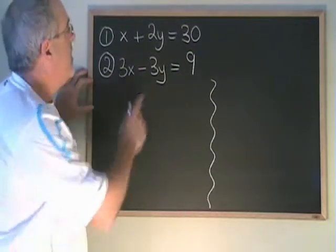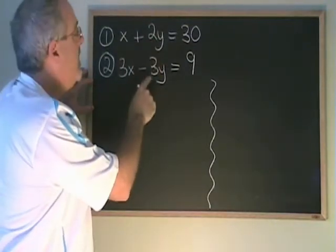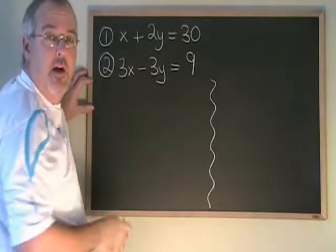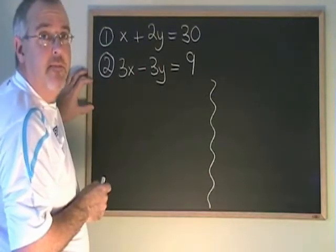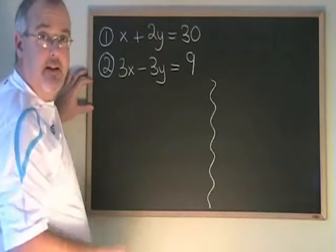When we do that, if the denominator of one fraction is a 2 and the denominator of the other is a 3, we look for the lowest common multiple. We'll do the same thing here. The lowest common multiple of 2 and 3 is 6.